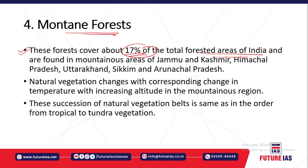The Himalayas flow from Jammu and Kashmir, Himachal Pradesh, Uttarakhand, Sikkim, and Arunachal Pradesh, so most of the mountainous forest regions are in these states. The natural vegetation found in this area depends on the altitude — vegetation changes with altitude.